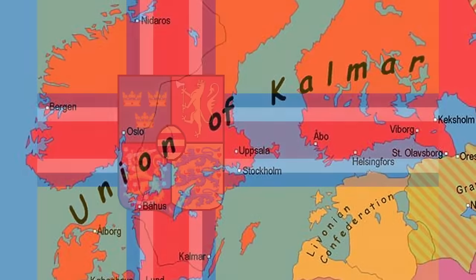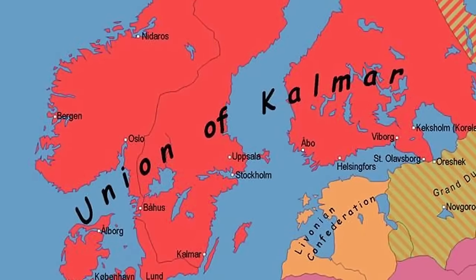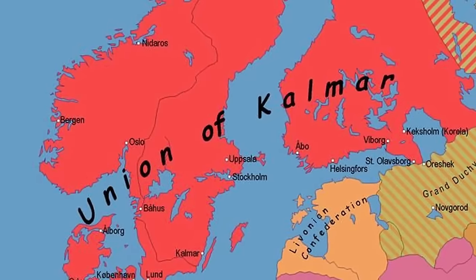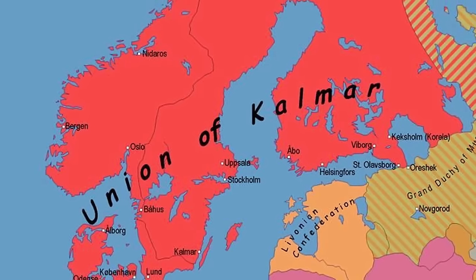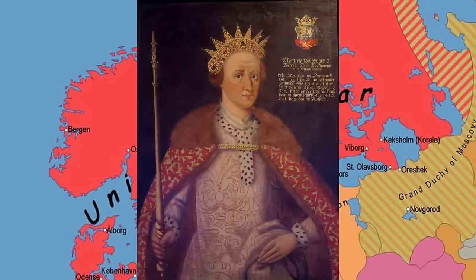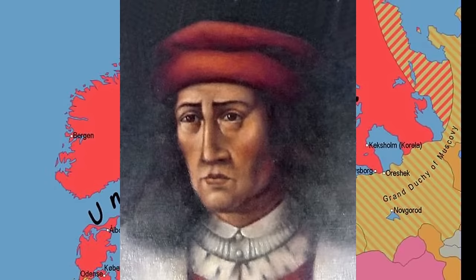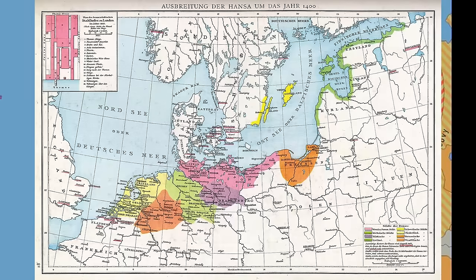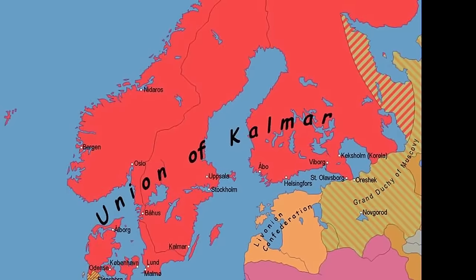The Kalmar Union was a political union that brought together the three kingdoms of Denmark, Sweden, and Norway under a single monarch. The union was formalized in 1397 in the city of Kalmar, Sweden, where the treaty was signed to bring the three kingdoms closer together in trade and defense. Queen Margaret I of Denmark was its key figure at the start, then later her adopted son Erik of Pomerania became the ruling monarch. The union was meant to counterbalance the Hanseatic League, a Germanic defensive and commercial confederation in Northern Europe. In the early 1500s the union was unraveling, and in 1523 it dissolved.